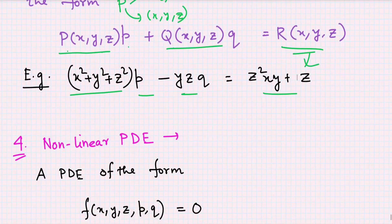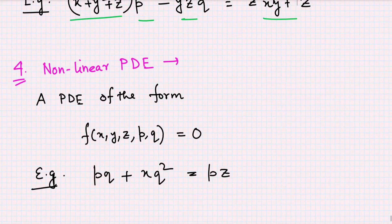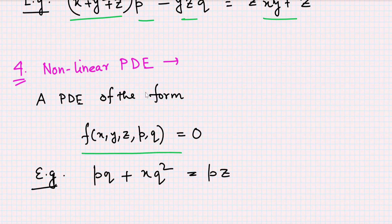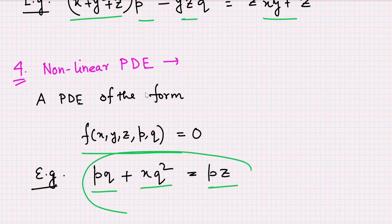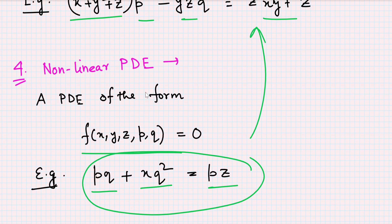A non-linear PDE is one that does not belong to any of the above three categories. It is a mixed type of equation of the general form f(x, y, z, p, q) = 0. For example: p·q + x = p·z. This equation does not fit the linear, semi-linear, or quasi-linear forms, so it is classified as non-linear. This entire categorization is based on first-order PDEs.